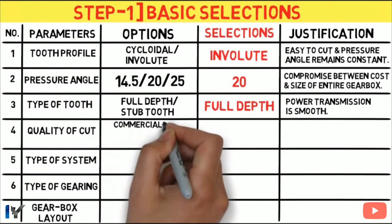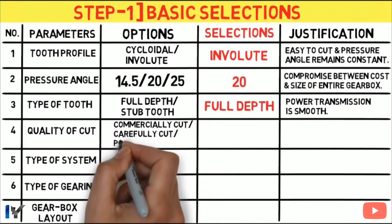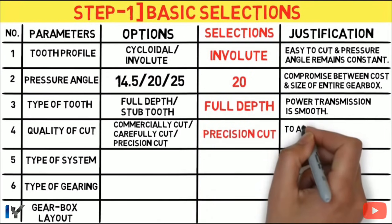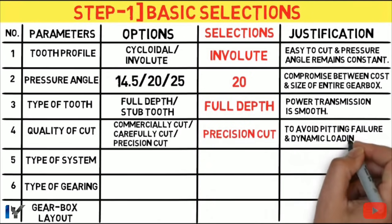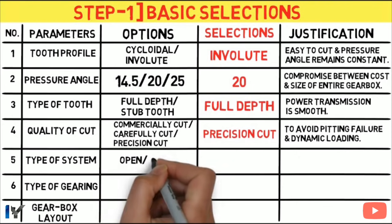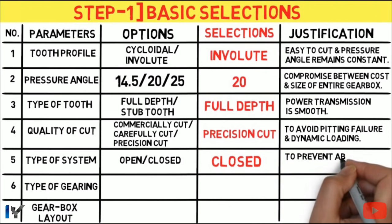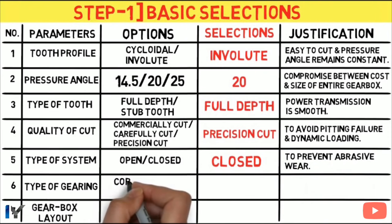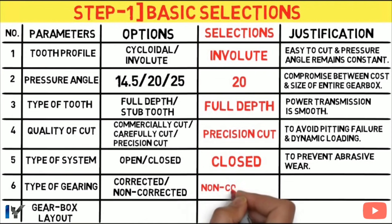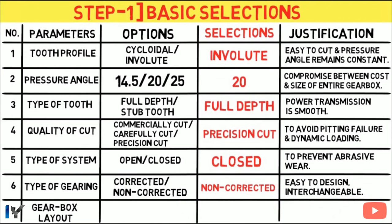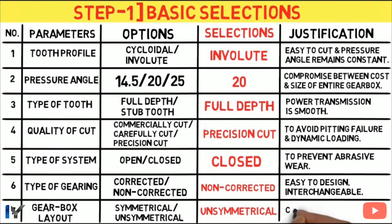Type of tooth: selecting full depth, as power transmission in full depth tooth is smooth. Quality of cut: selecting precision cut to avoid pitting failure and dynamic loading. Type of system: choosing closed system to prevent abrasive wear. Type of gearing: selecting non-corrected, which is easy to design and interchangeable. Gearbox layout: selecting unsymmetrical, which is compact and less costly.